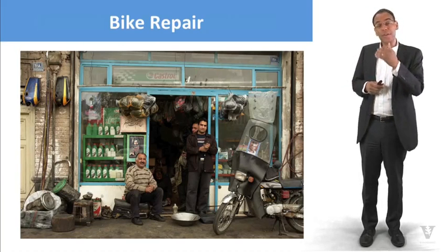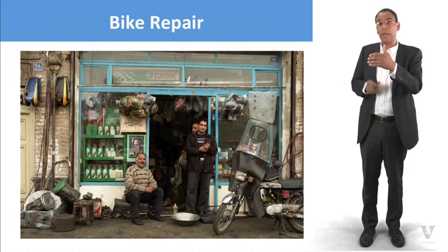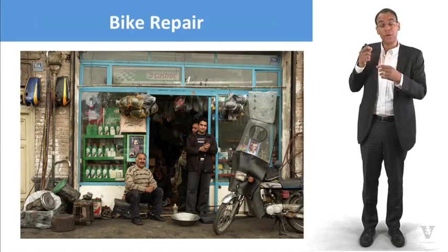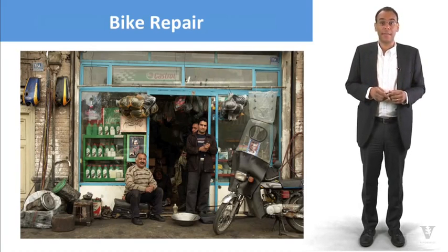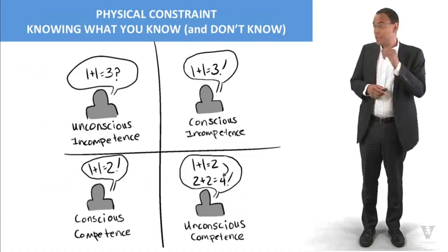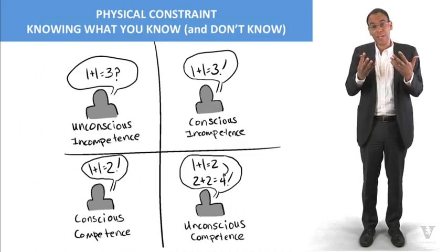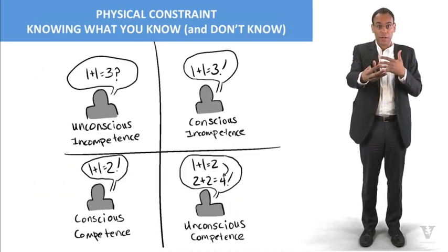Unconscious competence can be a good thing in a case like this around motorcycle repair. However, it can be a bad thing when we don't understand that we don't know something, in which case we've gone around the full circle and then we're once again at the state of unconscious incompetence. And so these form kinds of constraints for us that we really have to understand our understanding of what it is we know.